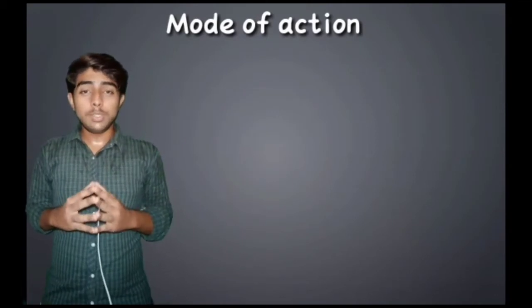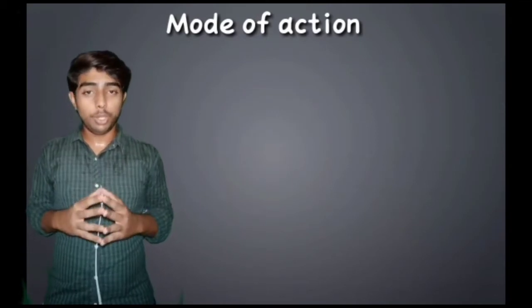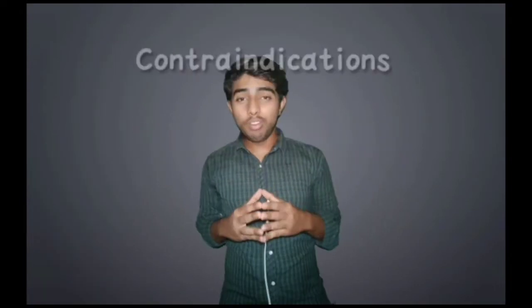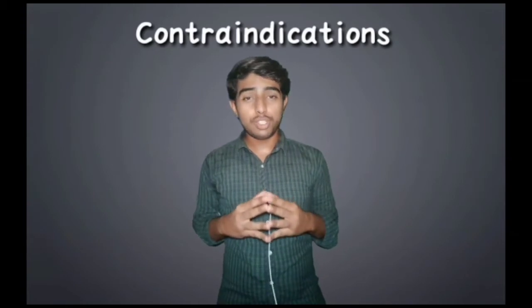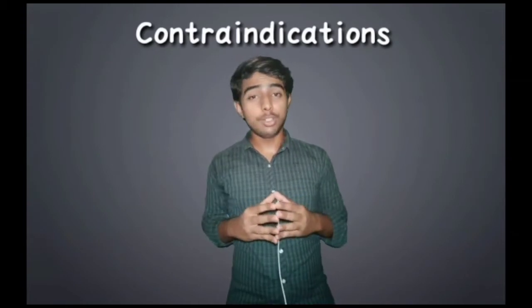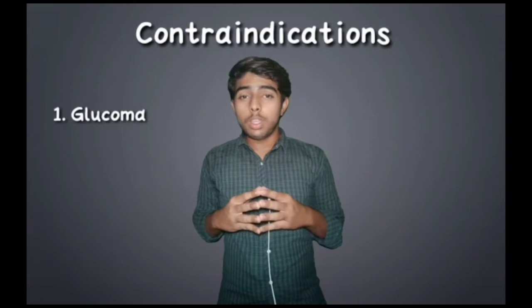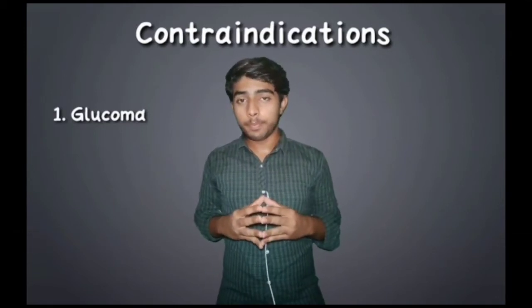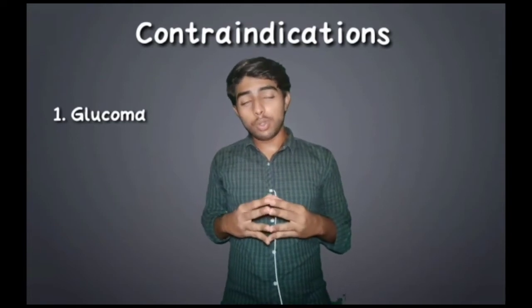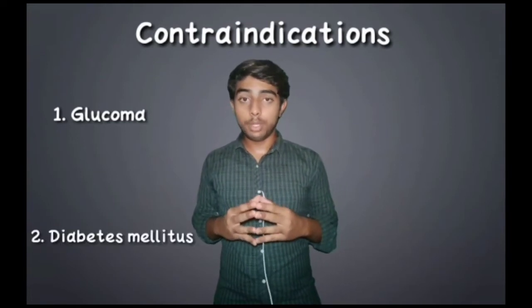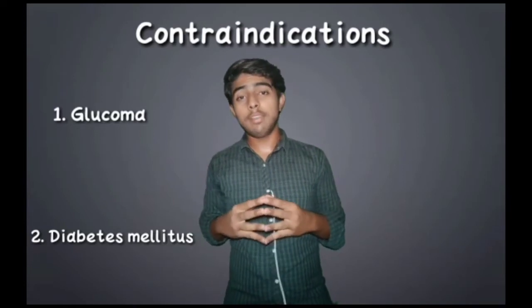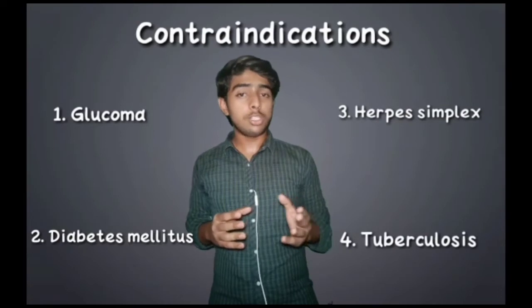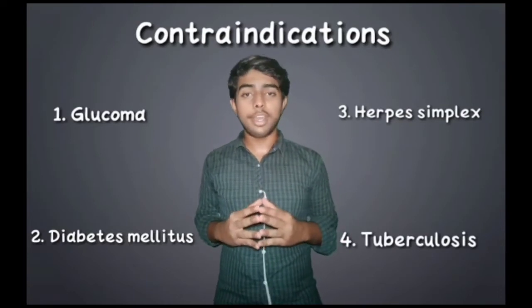This was the mode of action of Budesonide. Now we will see the conditions in which Budesonide is contraindicated, which includes glaucoma, because Budesonide can increase intraocular pressure and can worsen glaucoma. It is also contraindicated in high blood sugar level, because Budesonide can also increase blood sugar level. Herpes simplex and active or inactive tuberculosis are also conditions in which Budesonide is contraindicated.